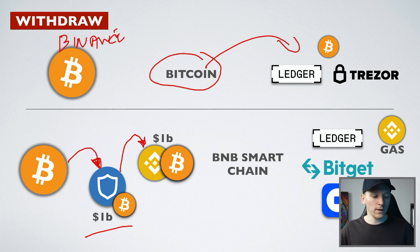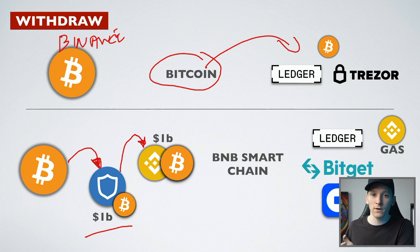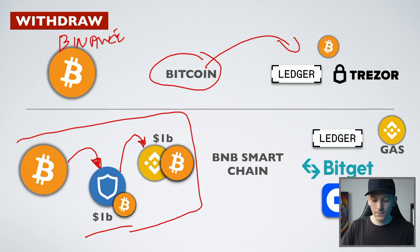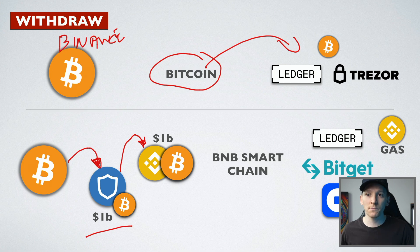If you withdraw Bitcoin over the BNB Smart Chain, you have the value of Bitcoin but it's not on the Bitcoin blockchain, which means you have different trust assumptions. You must trust the BNB Smart Chain not to shut down or be co-opted, and trust that Binance is buying Bitcoin and backing it one-for-one. However, it's much cheaper to send transactions — different products for different people.